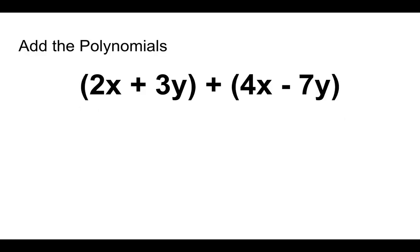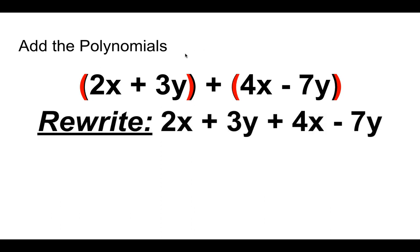These are two different polynomials being added together, but notice that there's parentheses. Because we're adding, we don't actually need those parentheses. So we can do a rewrite where we write the exact same thing, 2x plus 3y plus 4x minus 7y.